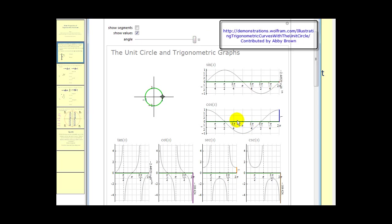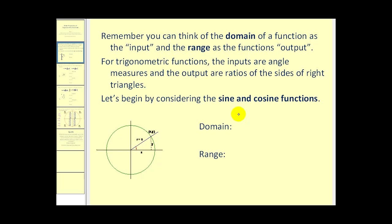If you look at these two graphs, you can see that if we continued around the circle again, the graph would just continue, or if we went clockwise for negative angles, we would go backwards. So this graph will go left and right forever, meaning the domain would be all reals. However, the range — the high and low points — has a lowest point of negative one and a highest point of positive one. So the domain for both sine and cosine is all reals, and the range is from negative one to positive one.